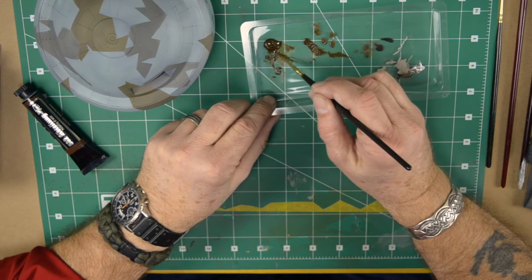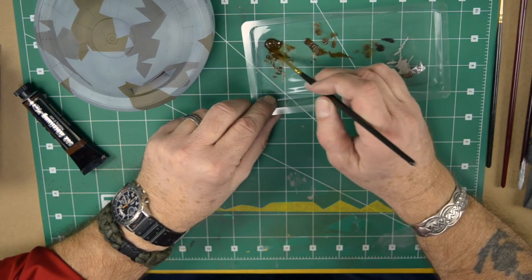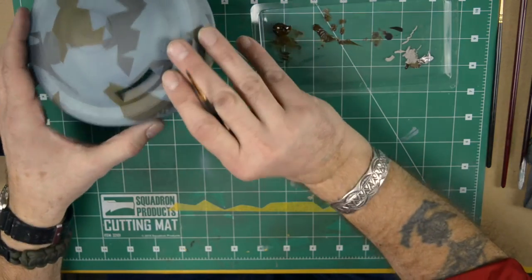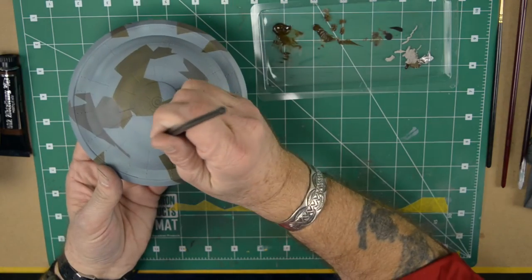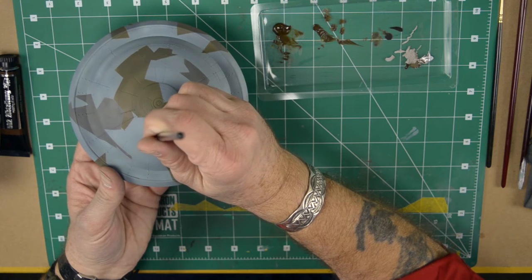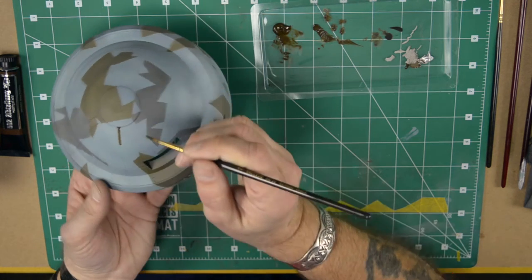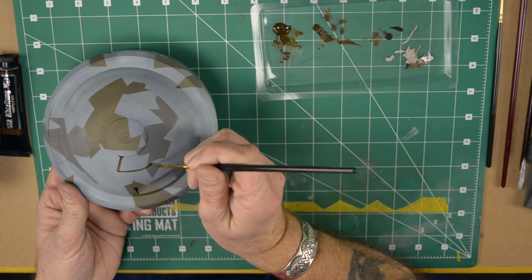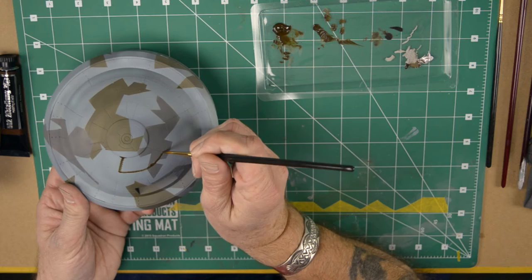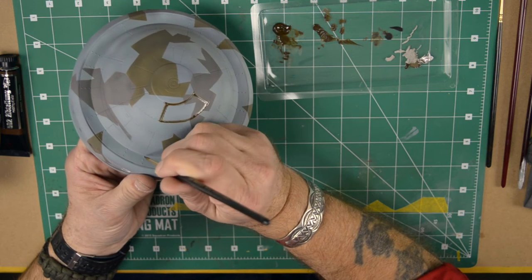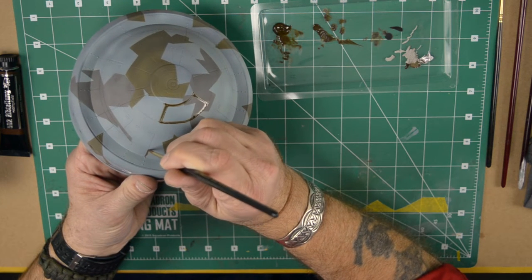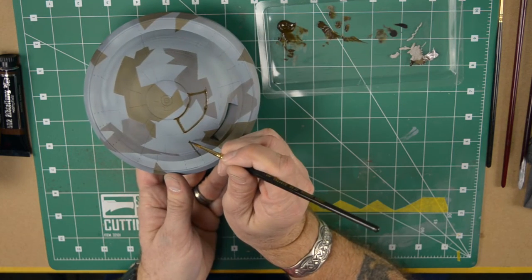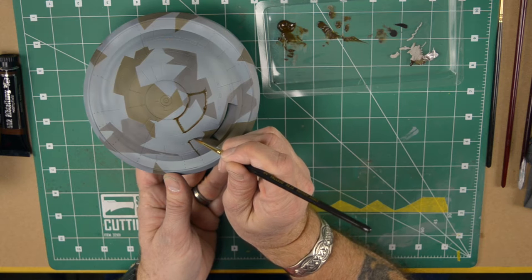In this video, I'm not going to show the whole side, just a section. I'll show you some techniques and the process. Let's start with applying some thin raw umber into the panel lines. For that I use a number two brush. It doesn't matter if you spill outside the lines because eventually you'll wipe it off or blend it in. Just try to stay as close as you can to the panel lines and rivets.